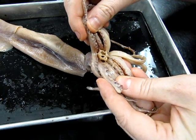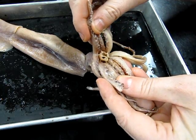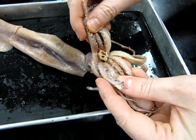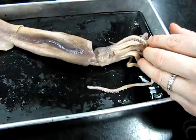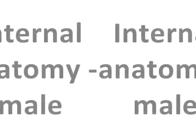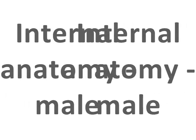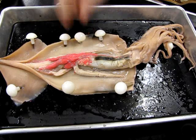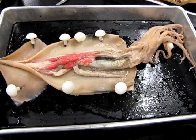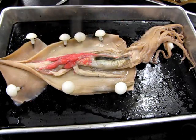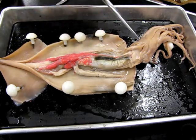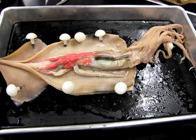So that is a basic tour of the external anatomy of this animal. This is a male specimen. You can see I've pinned down the mantle here to expose the mantle cavity.